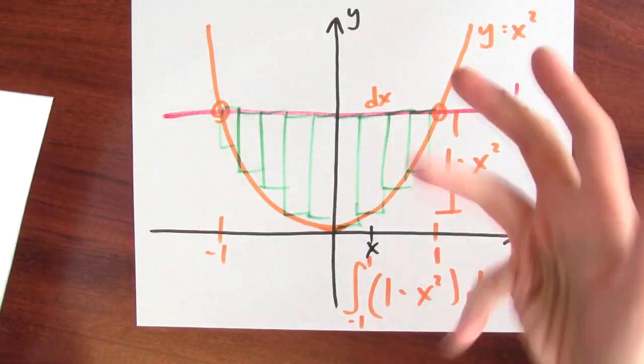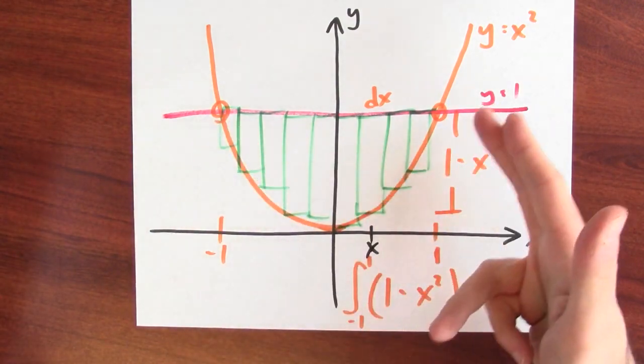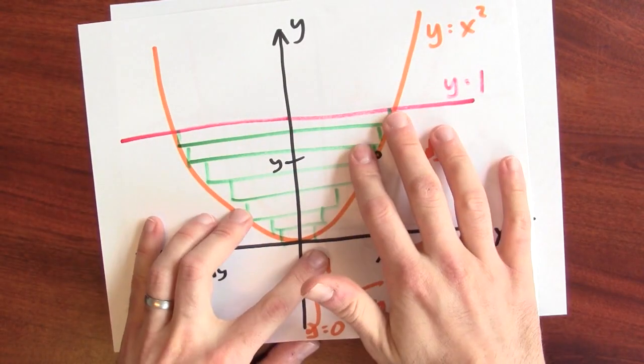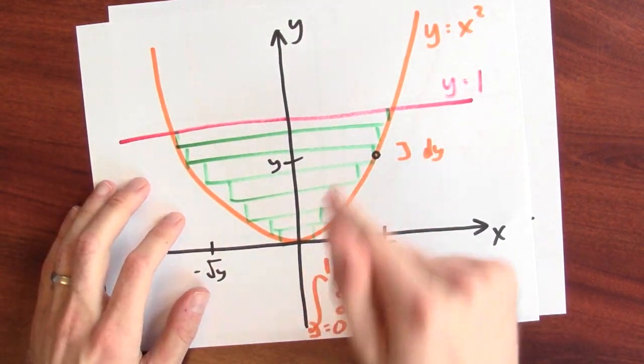We've seen that we can use either horizontal strips or vertical strips when using integrals to calculate area. We end up computing the same number, the area of this region. Whether we use vertical rectangles or horizontal rectangles, we're getting the same answer, the area of this region.